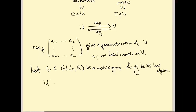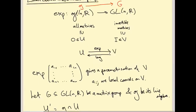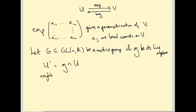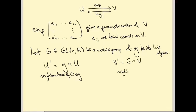Take U' to be little g intersected with U. Since U lives inside little gl_n(R) as a neighbourhood of zero, intersecting with little g gives a neighbourhood of zero inside little g. Let V' be the intersection of big G with V, which is a neighbourhood of the identity in big G. Now look at the exponential map from U' to V'.